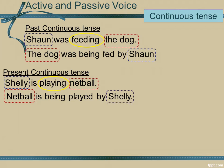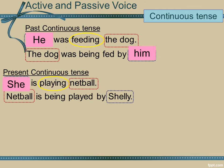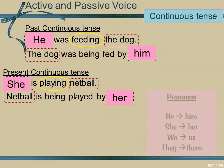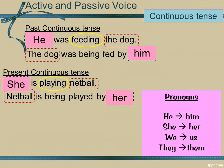With the future continuous tense, we rarely convert it into the passive voice. If I was to substitute all the proper nouns with pronouns, it would look something like this: 'He was feeding the dog' becomes in passive voice 'the dog was being fed by him.' 'She is playing netball' becomes 'netball is being played by her.' The pronouns switch in form in the passive voice — He becomes Him, She becomes Her, We becomes Us, They becomes Them.